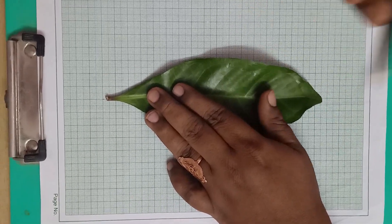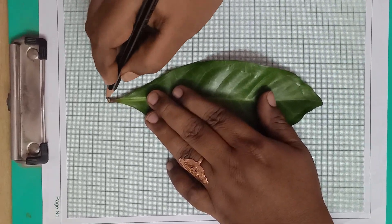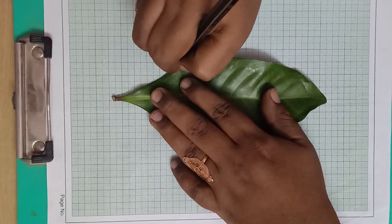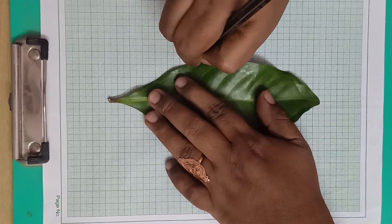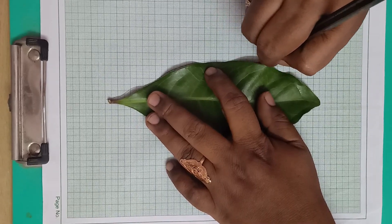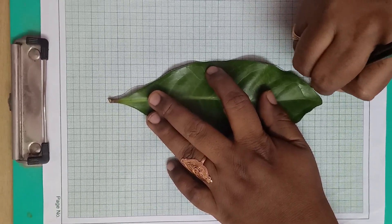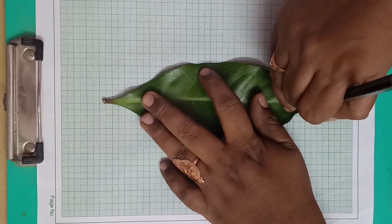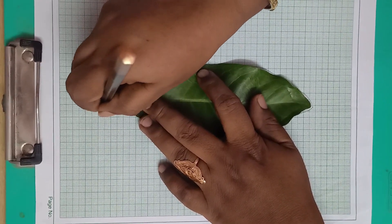First, start drawing the outline of your leaf by using pencil. Like this, you draw the outline of your leaf.